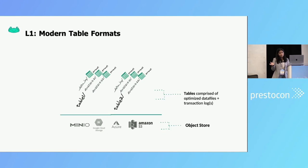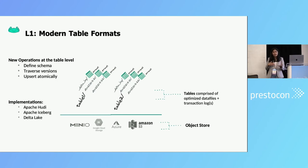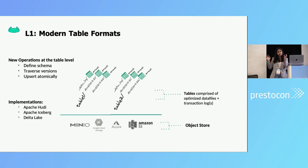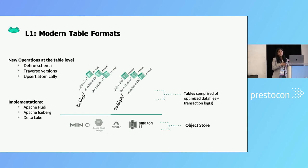Here you can see an example of a Delta Lake table, where you have the Delta log and the actual files stored underneath. Because it's a table, you can have the schema defined, so you can have an expected schema of how the data should look, making it easy for querying by downstream applications. You can traverse between different versions by snapshotting them — all happening at the table level. The popular implementations are Hudi, Iceberg, and Delta Lake. So far, we did a file level optimization going for Parquet, then went one step further with table level optimization using open table formats.